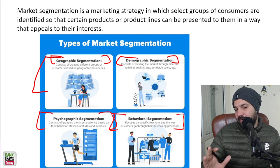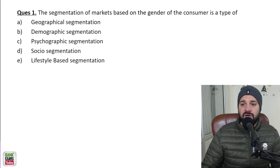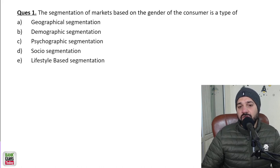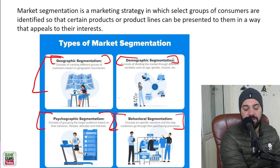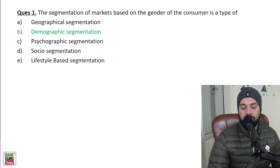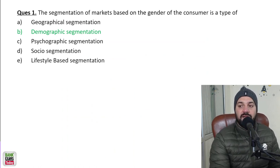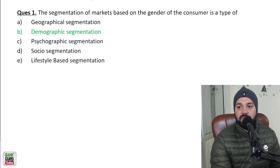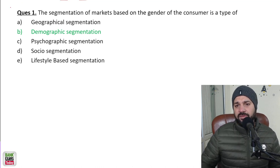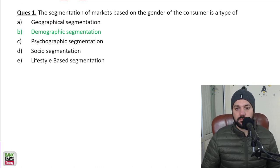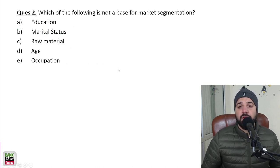The segmentation of markets based on gender — which type is that? Gender falls under demographic segmentation. Demographic segmentation is based on gender, age, income, and similar factors, while geographic segmentation is based on location.